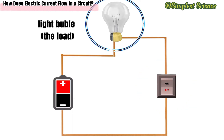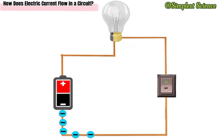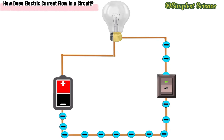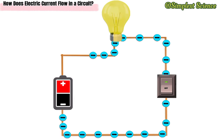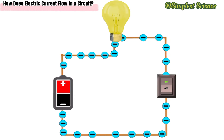The light bulb is the load, which makes the circuit nothing in its absence, since it serves as the main building block as it is the component that is energized. When the electric current passes through a bulb, it heats up the filament and gives out light energy.